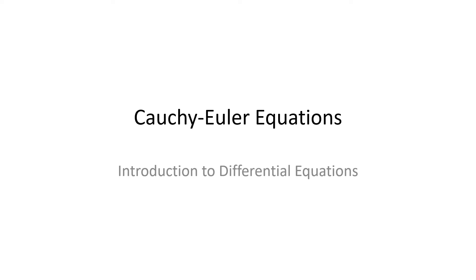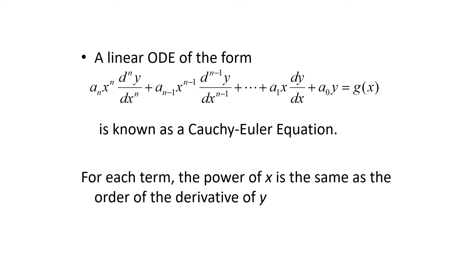In this lecture we're going to talk about Cauchy-Euler equations. A Cauchy-Euler equation is a linear ODE of the form a_n x^n times the nth derivative of y plus a_{n-1} x^{n-1} times the (n-1)th derivative of y, all the way down to a_1 x dy/dx plus a_0 y equals g(x).